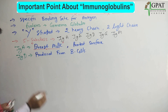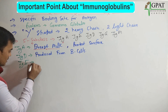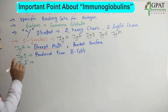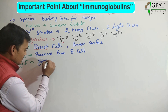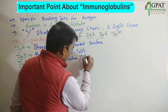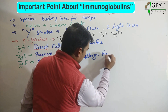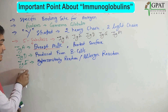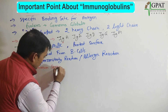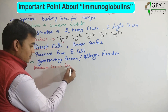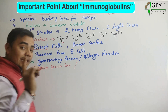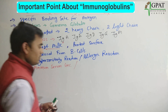Next is IgE. IgE is mainly important — IgE has the main function of being responsible for the hypersensitivity reaction, also called the allergic reaction. IgE immunoglobulins have minimum serum concentration. If we talk about the concentration of all the immunoglobulins, IgE has the minimum serum concentration.